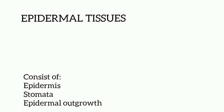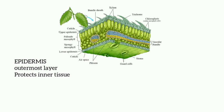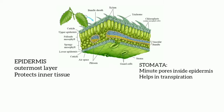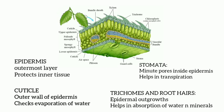First, we have the dermal or epidermal tissue system. It consists of epidermis, stomata, and epidermal outgrowths. You can see the parts in the picture given. Epidermis is the outermost layer and it protects the inner tissue. There are minute pores called stomata in the epidermis. The stomata helps in transpiration. Cuticle is present in the outer wall of the epidermis and it checks evaporation of water. Trichomes and root hairs are the epidermal outgrowths and they help in absorption of water and minerals.